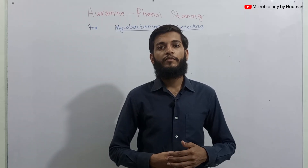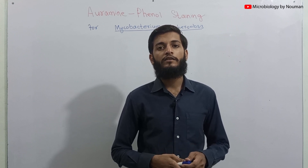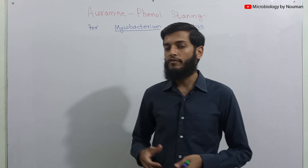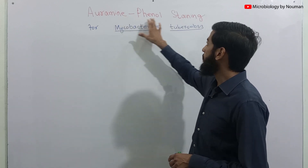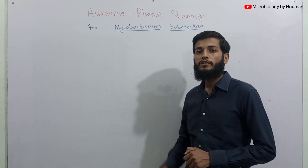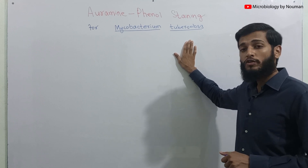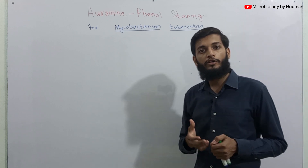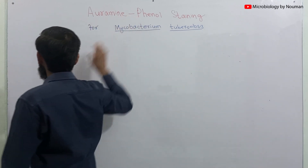Assalamu alaikum, you are watching Microbiology by NM. In this video we will be talking about a fluorescent staining method known as auramine phenol staining, which is used for the detection of Mycobacterium tuberculosis, the causative agent of TB or tuberculosis.